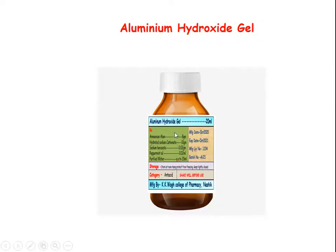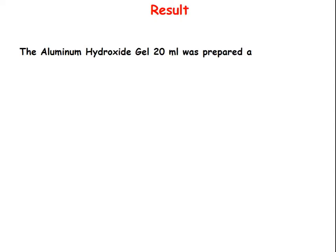We have filled our formulation in the bottle and labeled it with our prepared label. Result: Aluminium Hydroxide Gel 20 ml was prepared and submitted.